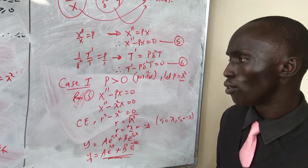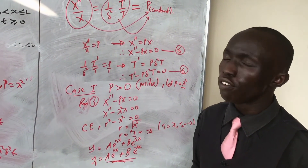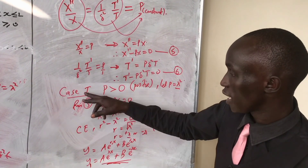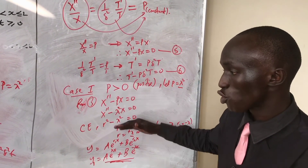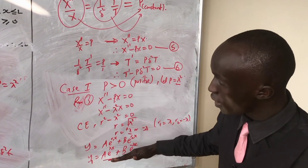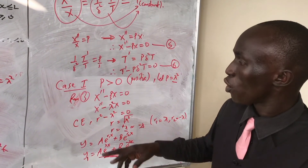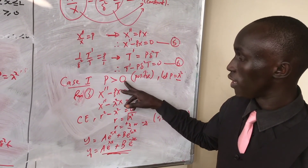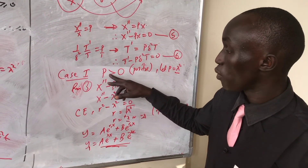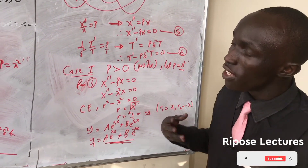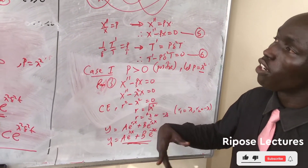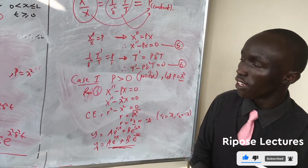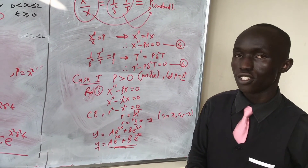Please don't forget to subscribe to my channel, like my videos, and share them. This was Case 1 of solving the PDE. In the next video I will do Case 2, when p = 0, and then Case 3, when p is less than zero — a negative constant. Please attend all the videos so you don't miss any case.